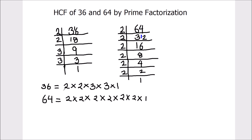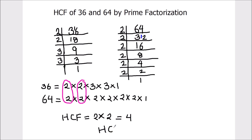So we got the factors of number 36 and 64. Now we will find the common factors between the two numbers to find the HCF. We see that the number 2 is common to both numbers — 2 is a common factor, and again 2 is a common factor. So the HCF of 36 and 64 is 2 times 2, which equals 4. The HCF of 36 and 64 is 4.